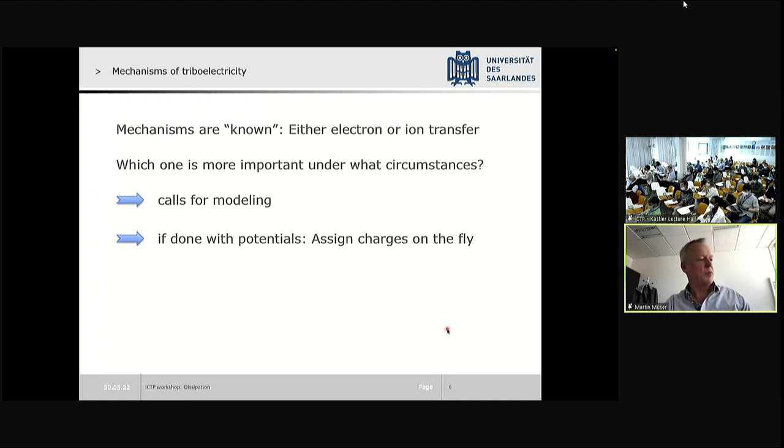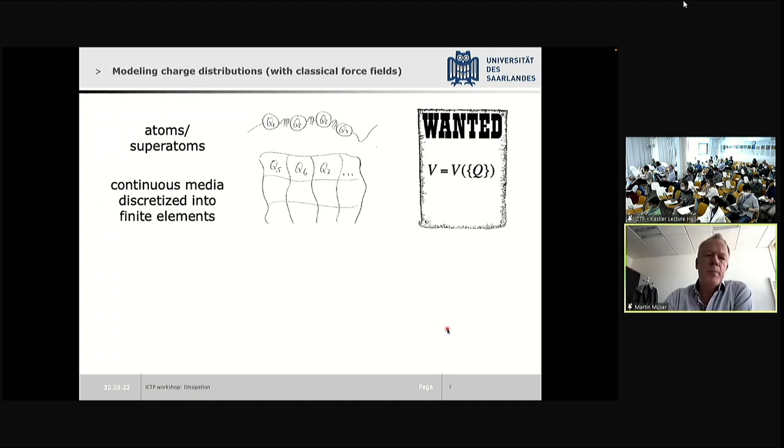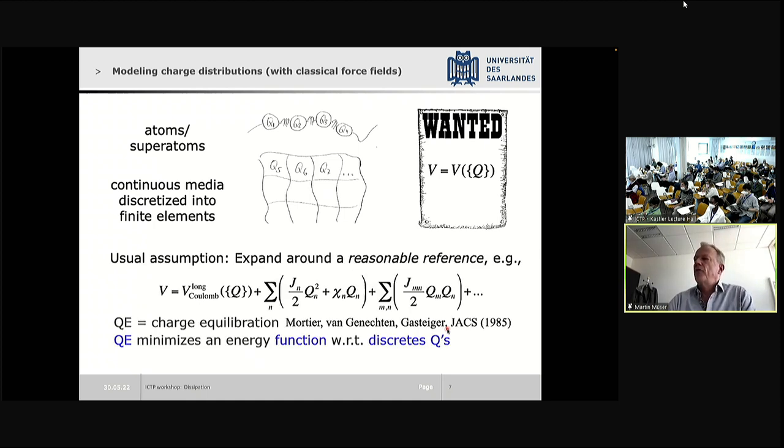Yeah, so the mechanisms are known. As in friction, it's more the question of which one is more important under what circumstances and what parameter favors one over the other, and that calls for modeling. I'm by nature a modeler who likes to use potentials because then we can use a few thousand or a few hundred thousand atoms. So when we do want to model triboelectricity, we must be in a position to assign charges on the fly. We cannot say you are a lithium atom or ion, you have charge zero or plus one. The atoms have to figure out themselves what charge they want to be at.